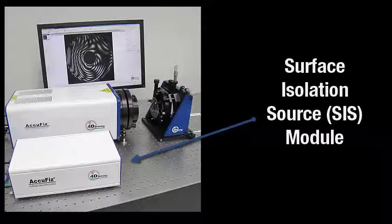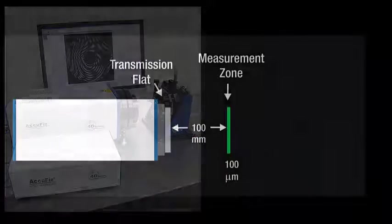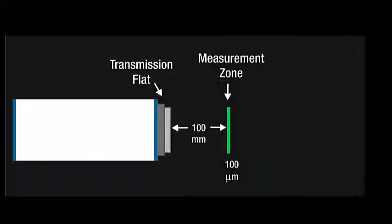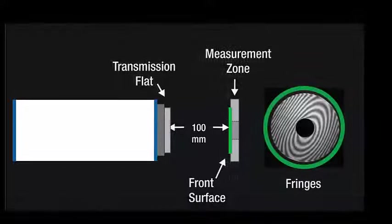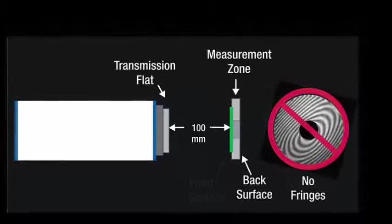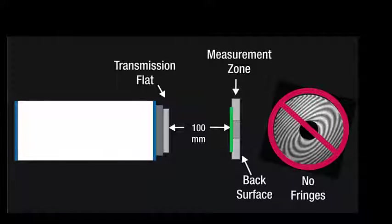Surface isolation is an alternative method in which a short coherence laser source is used to create a narrow measurement zone in front of the interferometer. A test surface within this zone will generate interference, while reflections from surfaces outside the zone will not interfere with the reference.